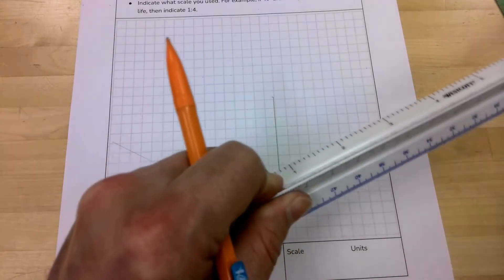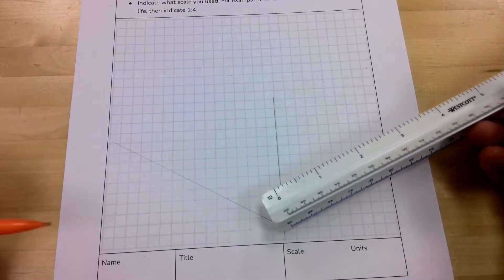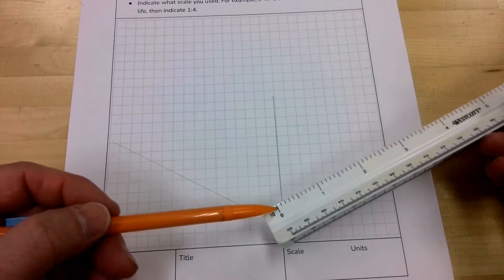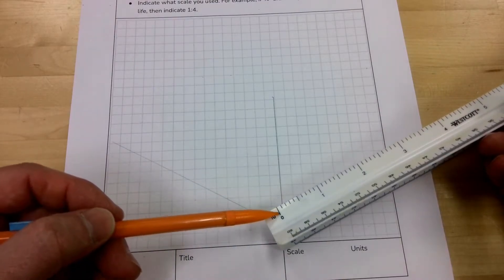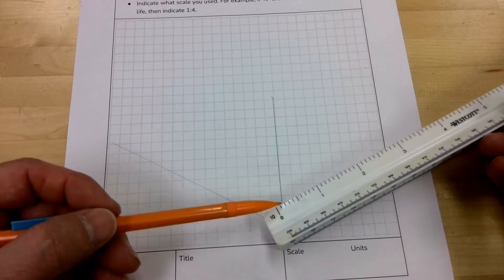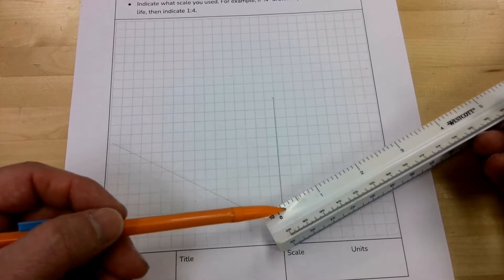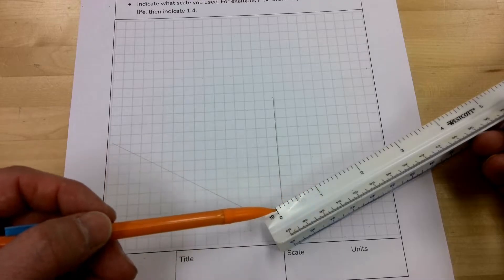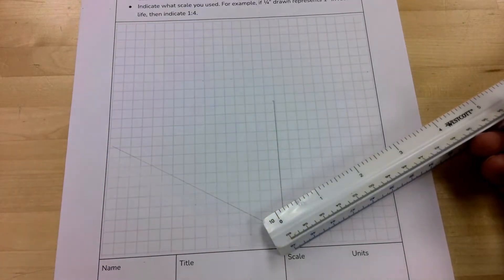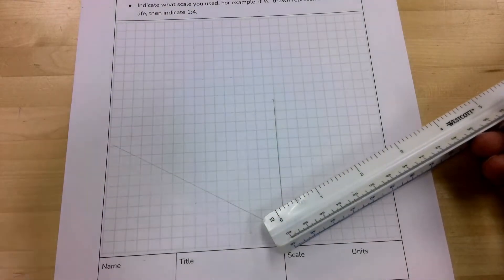Instead of using a regular ruler this time I'm going to use a scale, but I'm going to use the tens part of the scale which is in regular inches except instead of having sixteenth marks it has 0.1 marks since my dimensions happen to be in decimals.